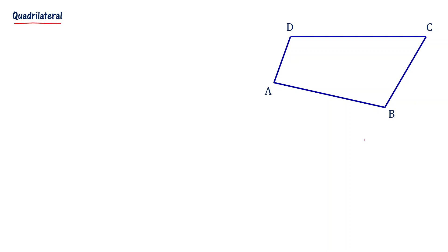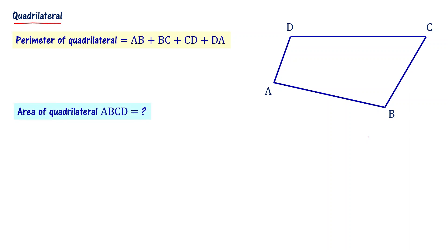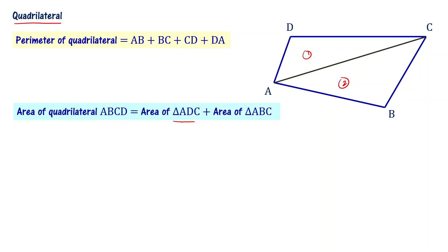The perimeter of the quadrilateral is the sum of all its sides. For quadrilateral ABCD, we are going to use the triangulation method to find the area. We are going to split this particular quadrilateral into two triangles — triangle 1 and triangle 2. Area of quadrilateral ABCD is equal to area of triangle ADC plus area of triangle ABC.